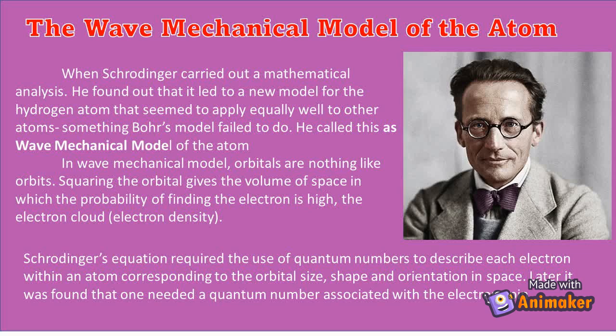The square of the orbital gives the volume of space in which the probability of finding the electron is high, the electron cloud or electron density. Schrödinger's equation required the use of quantum numbers to describe each electron within an atom correspondent to the orbital's size, shape, and orientation in space. Later it was found that one needed a quantum number associated with the electron spin.